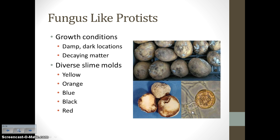Fungus-like protists grow best in damp, dark locations and grow well on decaying matter, since that's what they use for nutrition. They are very diverse — you see lots of different colors: yellow, orange, blue, black, red. This fungus-like protist mold was actually what caused the potato blight back in the 19th century in Ireland.